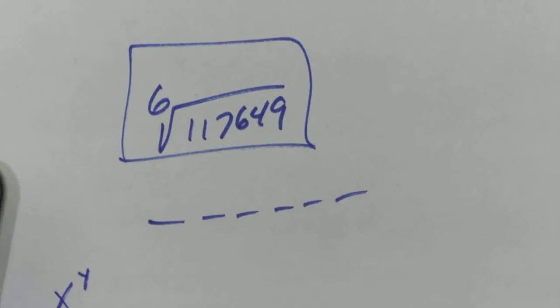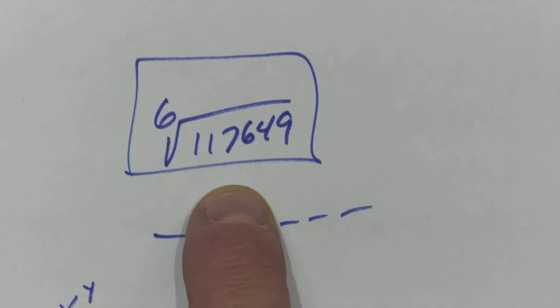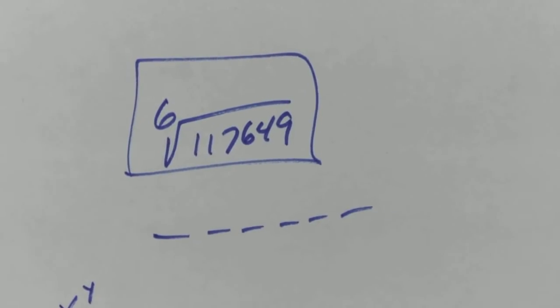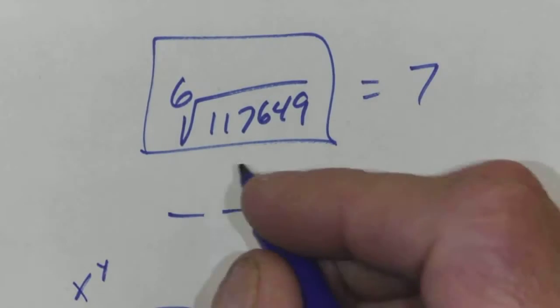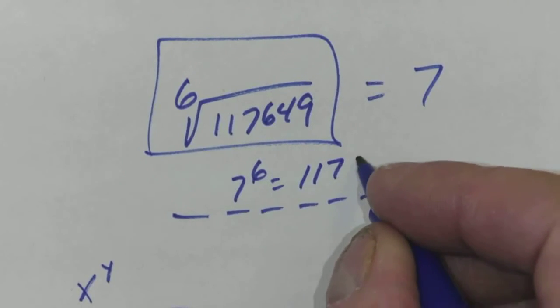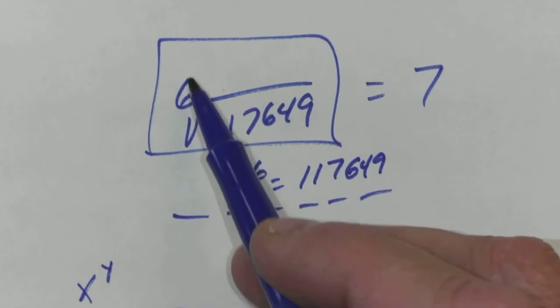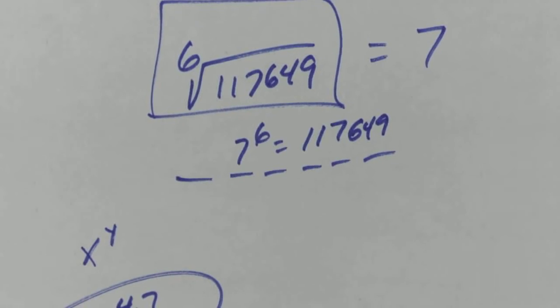So 117,649. Let me try 3 raised to the 6th. Oh, nope. That's not near big enough. 5 raised to the 6th. Oh, that's not big enough. Can anybody figure it out? 7. That's just a trial and error situation. So this would be 7, because what I did was I realized that 7 to the 6th gives me that 117,649. So then the 6th root of that is 7. We broke that up into something times itself six times.